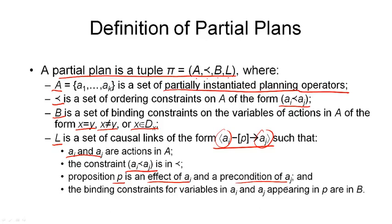And finally, since these expressions all contain variables, we've got to make sure that the binding constraints for variables that we're using in AI, in AJ, and also appearing in P are consistent and are also appearing in our binding constraints, the set B.